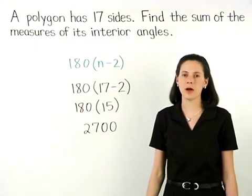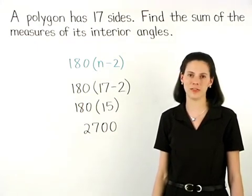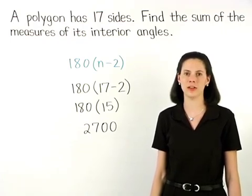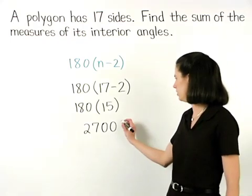So if a polygon has 17 sides, then the sum of the measures of its interior angles is 2700 degrees.